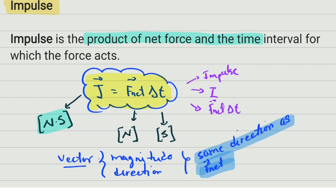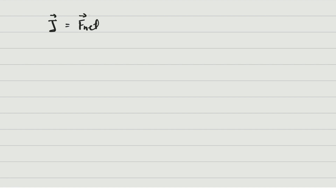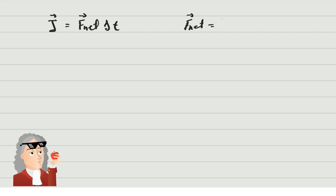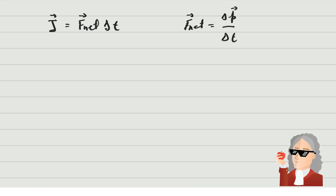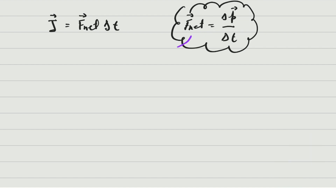Now let's quickly analyze the formula. We have that impulse is equal to net force multiplied by time. But you learned that net force is equal to the rate of change in momentum — this is Newton's law in terms of momentum. We can substitute this expression for F-net into the impulse formula.